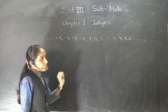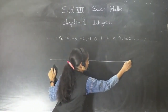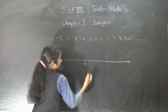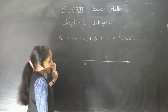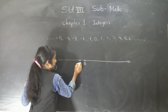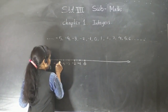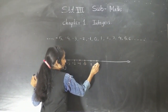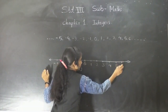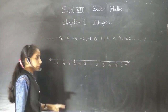Now we can represent these numbers on the number line. This is the number line. The numbers which are to the left of 0, the left side of 0, they are negative integers: minus 1, minus 2, minus 3, minus 4, minus 5. And to the right: 1, 2, 3, 4, 5, 6, 7. We can represent the numbers on the number line this way.